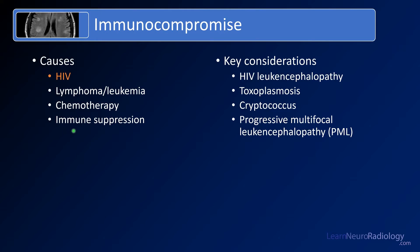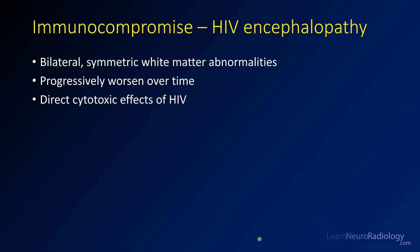In immunocompromised patients, there are a few things you want to think about when you're looking at the brain. One of them is HIV leukencephalopathy. You want to think about toxoplasmosis and cryptococcus, and then finally PML. These are things that you think about more in immunocompromised patients.